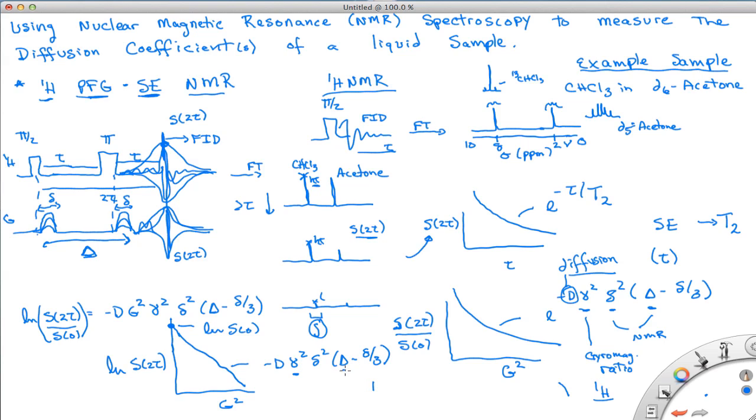Again, the gyromagnetic ratio, big and small delta are constants, so we can get out what the diffusion coefficient is. I hope this helps in a general explanation of using proton pulse field gradient spin echoes, and I briefly want to give you a few websites you can go to for more information.